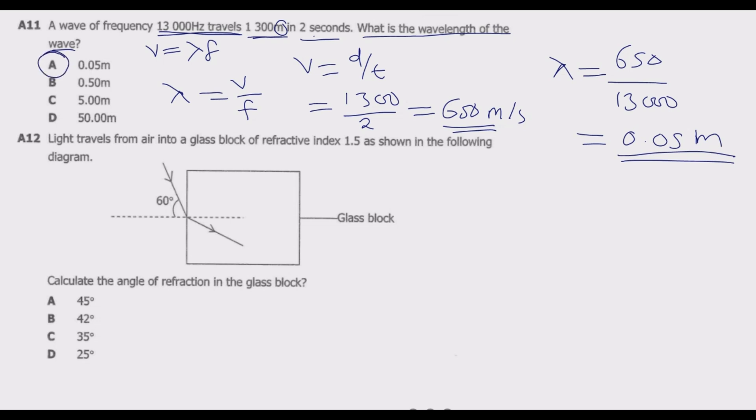We move to question 12. Light travels from air into a glass block of refractive index 1.5 as shown in the following diagram. Calculate the angle of refraction in the glass block. We need to find the angle of refraction. This is the normal, and the angle of refraction is this angle we need to find. We know the relationship between the angle of incidence, which is 60 degrees, and the angle of refraction.